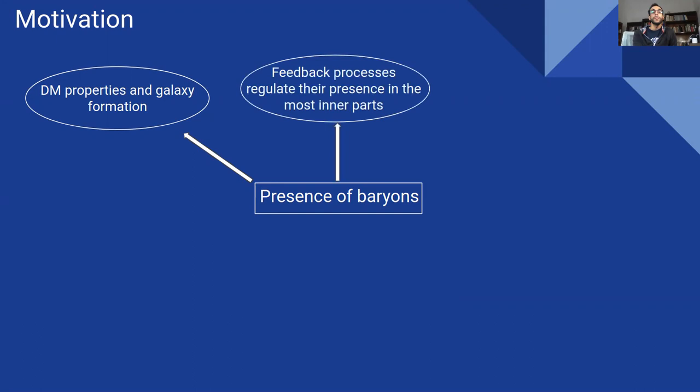Second, the infall of baryons within the central region of galaxies modify their internal structures and feedback processes such as supernova, AGN, or stellar formations contributes to regulate their condensation.